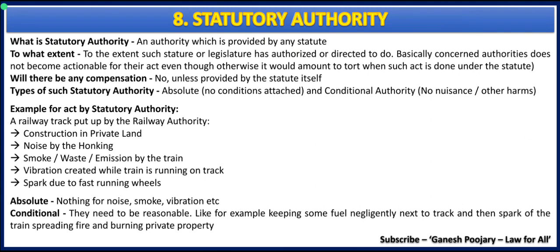For noise, smoke, and vibration, the railway has absolute authority and no case can be brought. However, spark due to fast-running wheels falls under conditional authority. If you negligently left fuel near the track and the spark from the wheels caused it to catch fire, spreading and burning private property, you can claim compensation — because the railway acted negligently beyond the scope of its authority. That is the distinction between absolute and conditional authority.